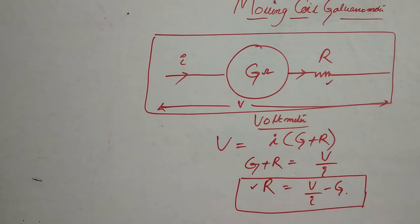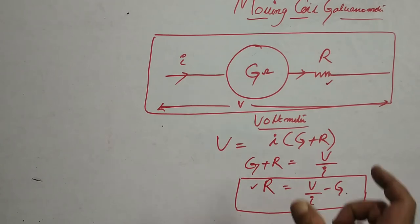That is required to measure the required potential difference across two points. So this setup is called the voltmeter.